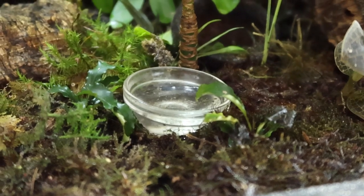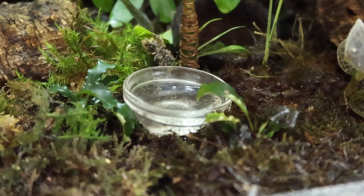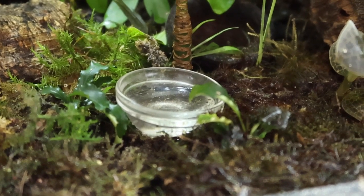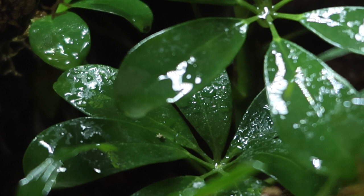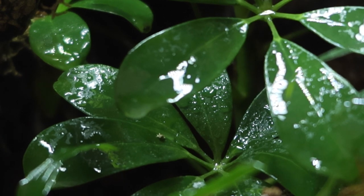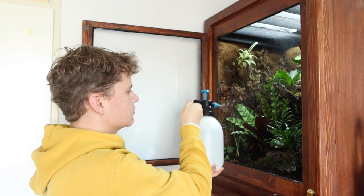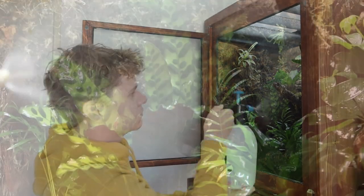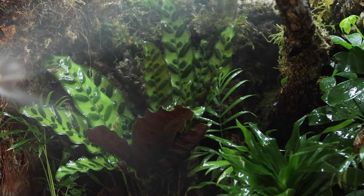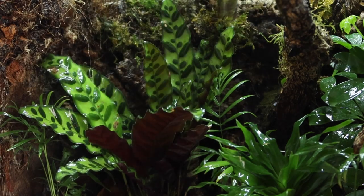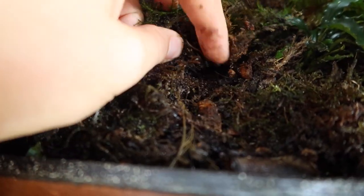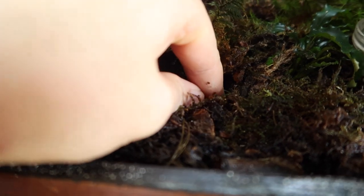Crested geckos generally don't like to drink water out of a bowl. Although I've seen Tito do it a few times, he definitely prefers to drink droplets off the leaves. So in order to keep my little dude hydrated, I spray down his tank every night. But since very little humidity is escaping, the water starts piling up. I did not notice this was happening for quite some time, until one day I touched the ground in his enclosure and noticed it was extremely moist.